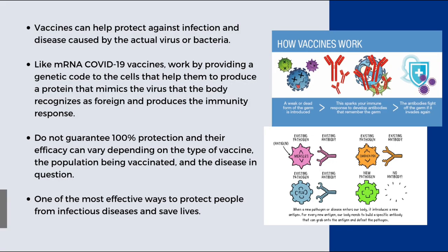By preparing the immune system in this way, vaccines can help protect against infection and disease caused by the actual pathogen. Some vaccines, like mRNA and COVID-19 vaccines, work by providing a genetic code to the cells that helps them produce a protein that mimics the virus, which the body recognises as foreign and produces an immune response.